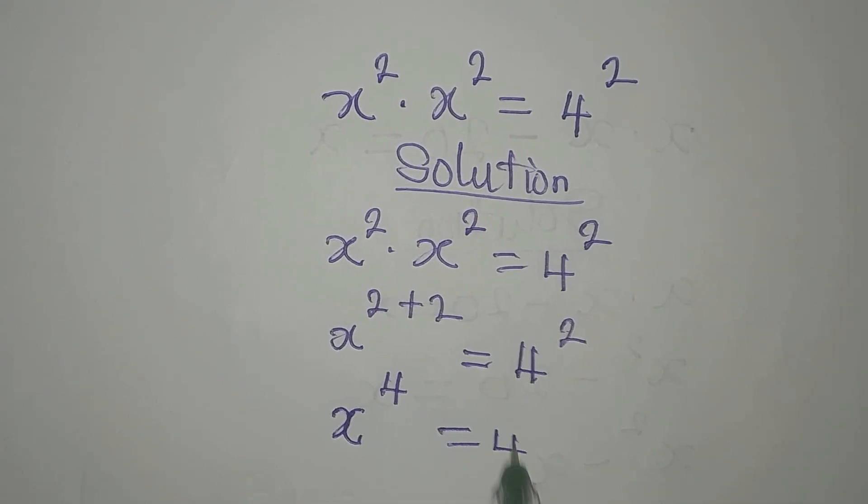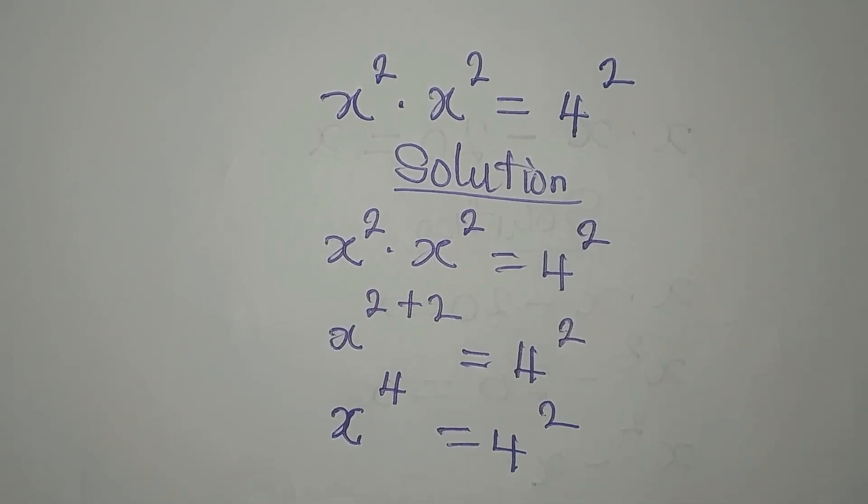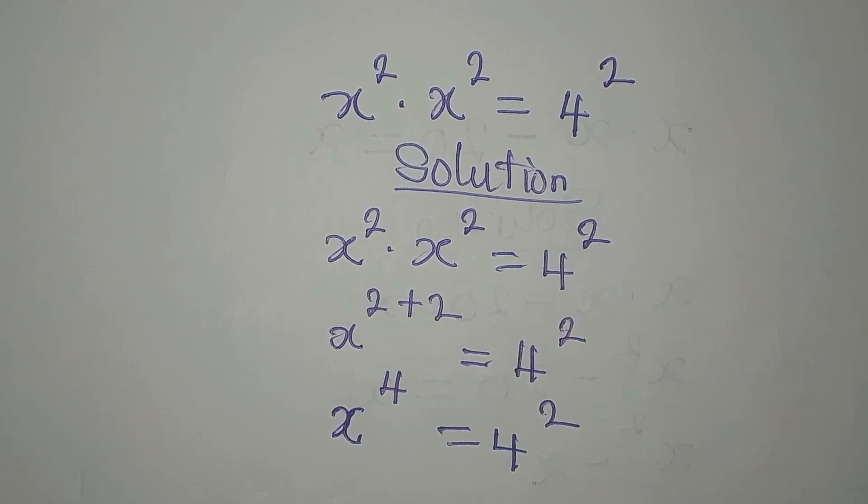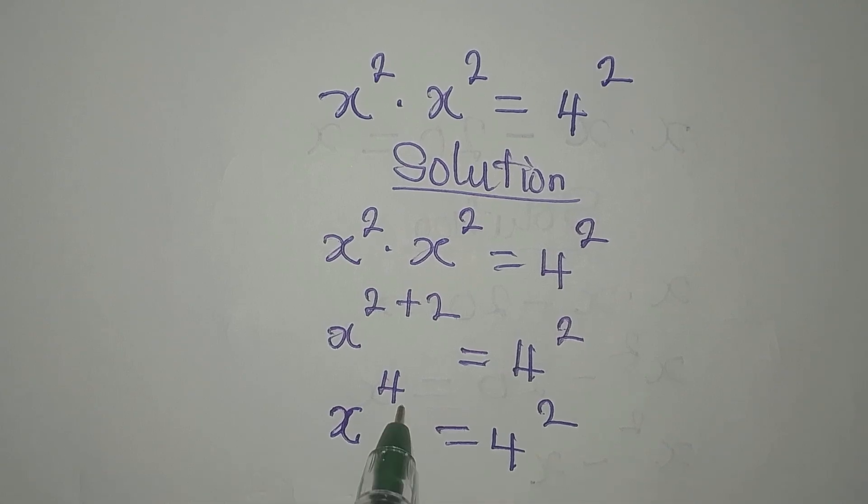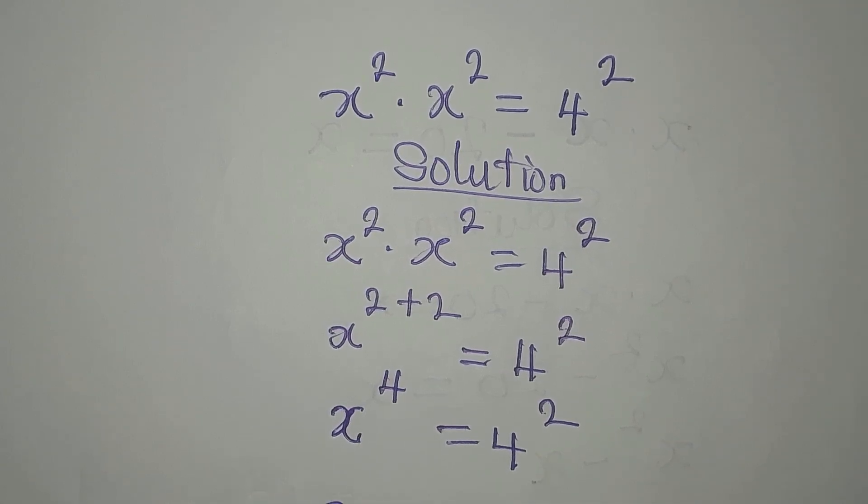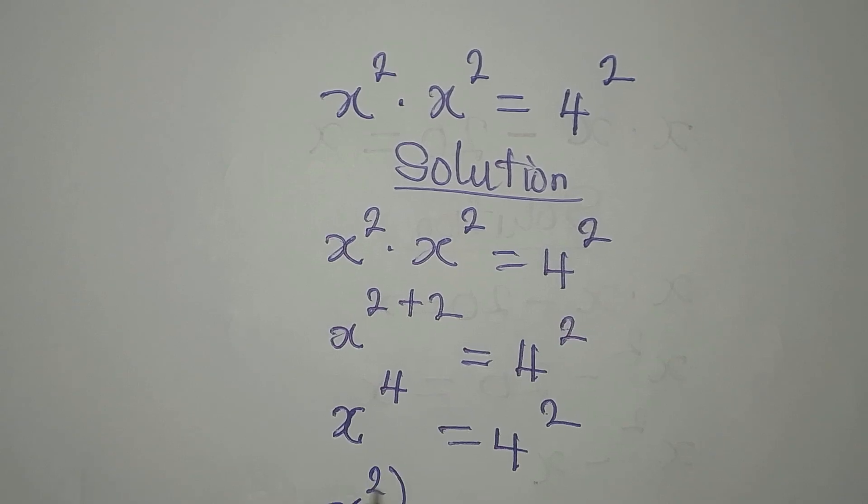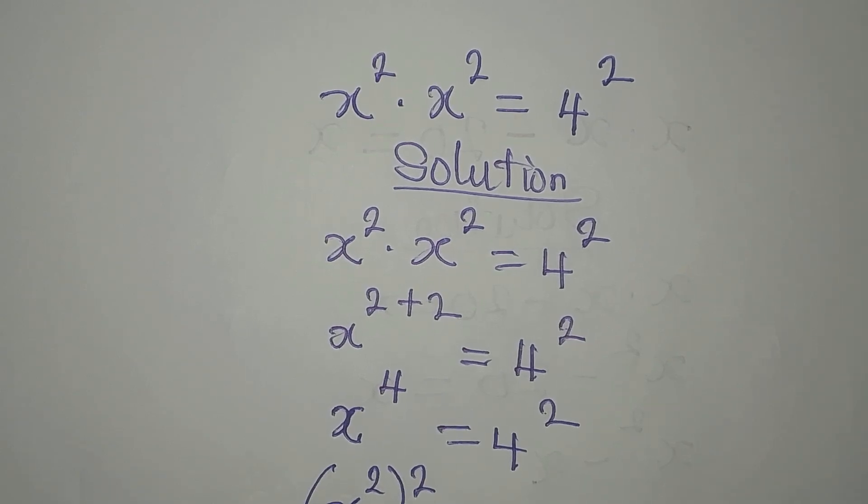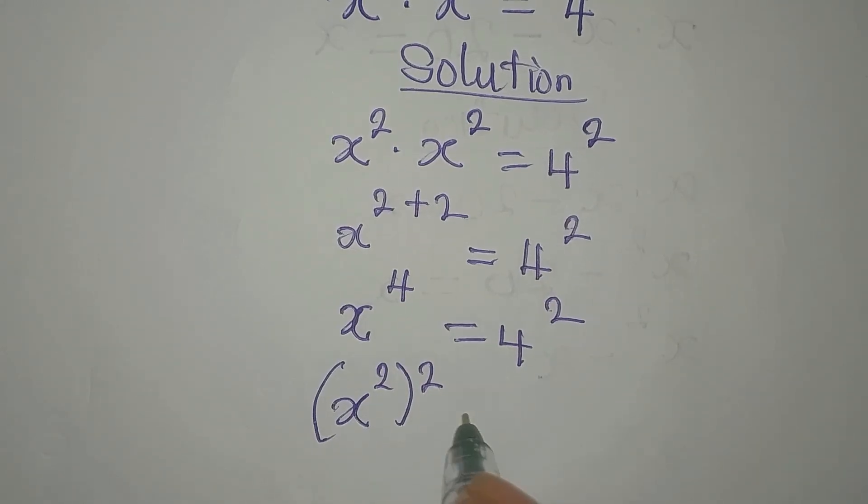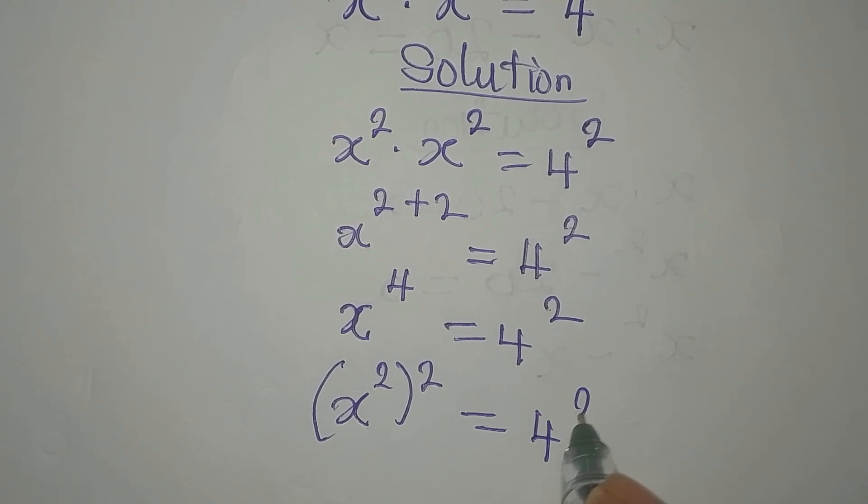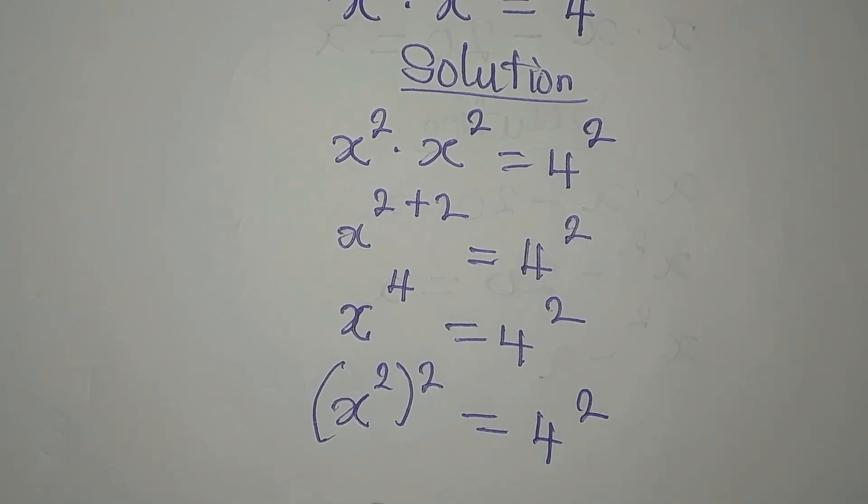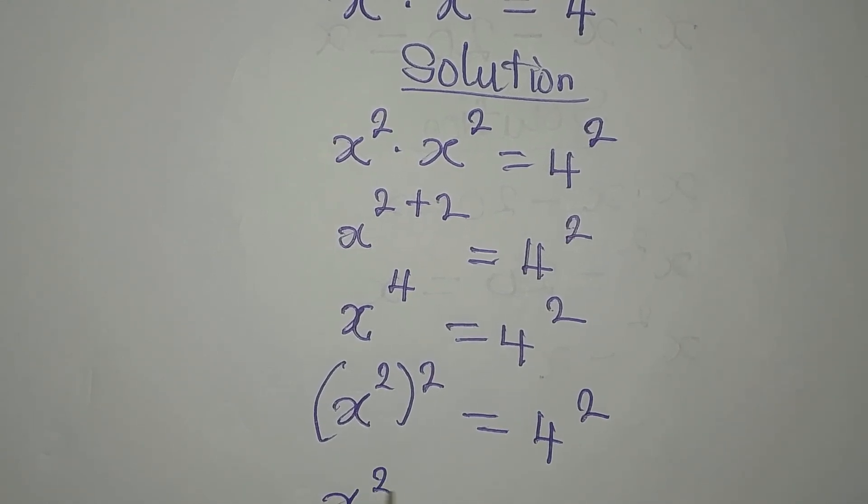But what I want to do is apply difference of two squares. That means I have to reduce this, so I have x squared to the power of 2, then on the other side we have 4 squared. Bring this to the left so we can apply our difference of two squares.